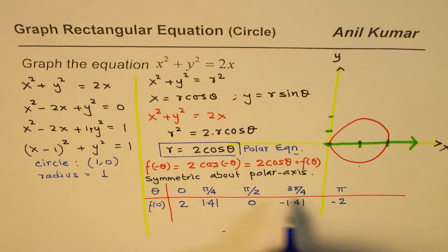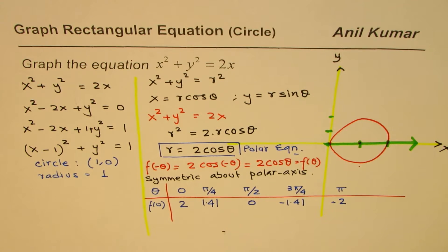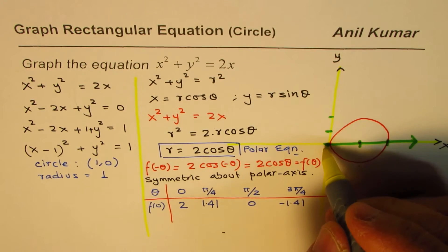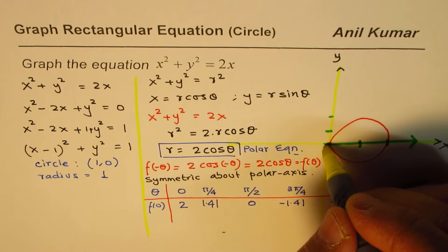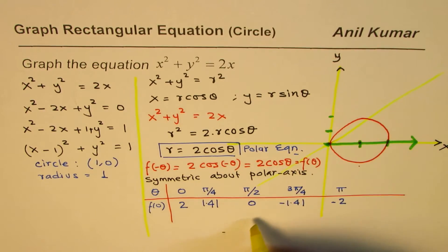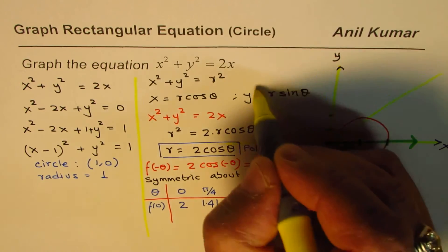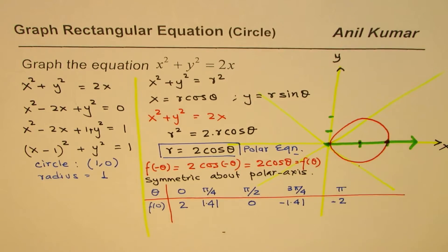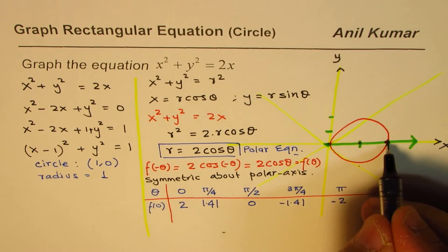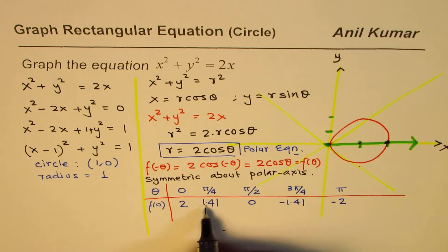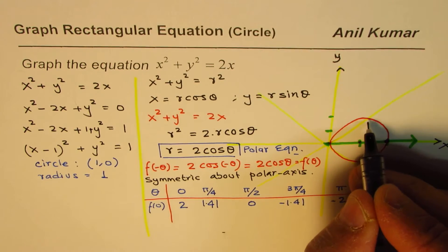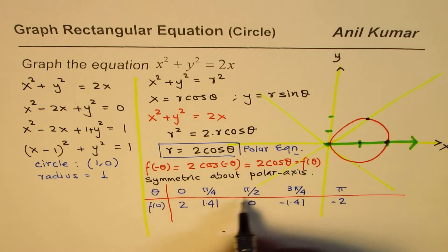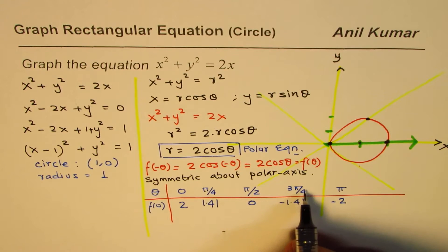Now let's plot these values. At θ equals 0, the value is 2, so we get a point there. At θ equals π/4, r is 1.41, which is less than 2 — so that is the second point. At θ equals π/2, r is 0, giving us the origin point.